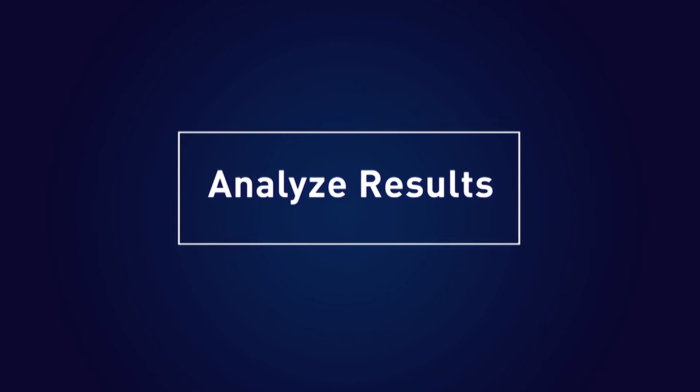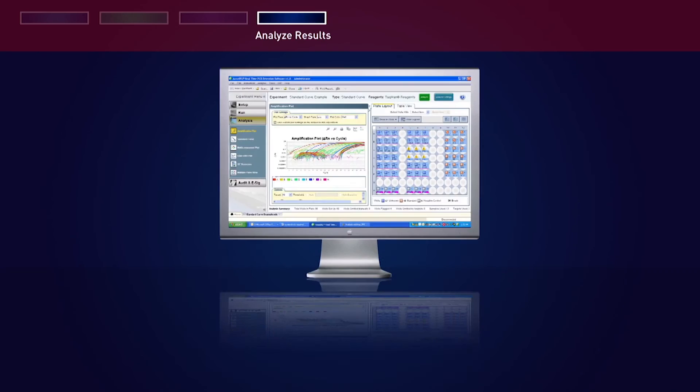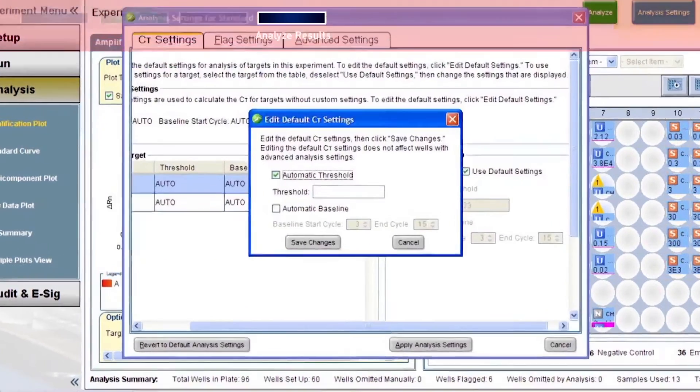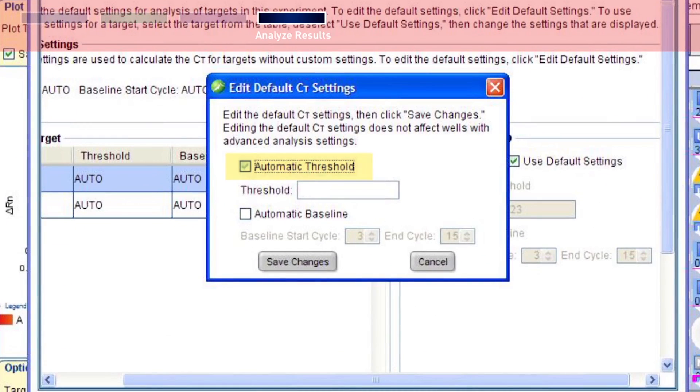The final step in this protocol is analyze results. In the AccuSeek software, select the following analysis settings. In the analysis settings window, deselect Automatic Threshold. In the threshold field, enter 0.2. Baseline may be run in automatic or manual mode, whichever mode best suits your data. Evaluate first with auto baseline by selecting Automatic Baseline.